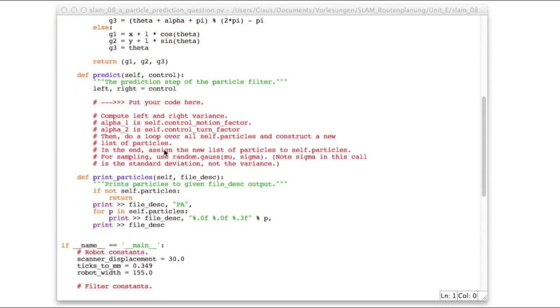Now here comes the prediction function you'll have to implement. It takes the control, which is left and right, and then here you have to program the steps we just discussed.